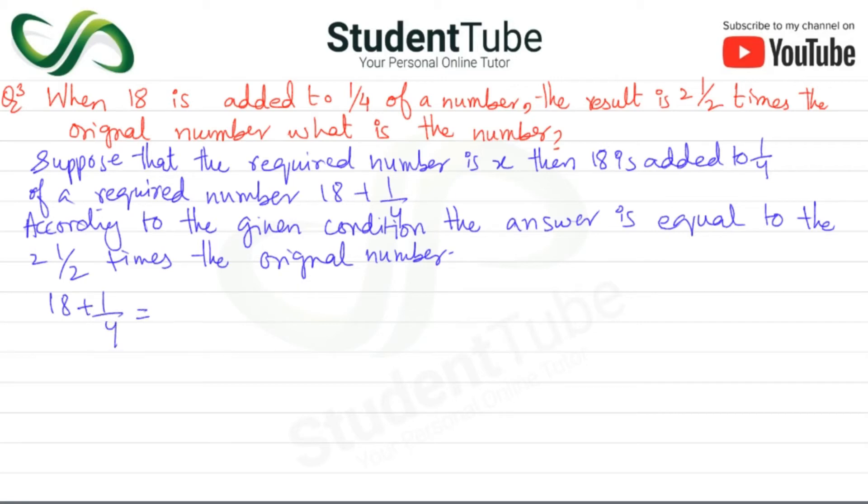Okay, now you can see here, suppose that the required number is x, then 18 is added to our required number 18 plus 1/4. So here we have plus 1. If we have x, then it will be 18 plus x/4.